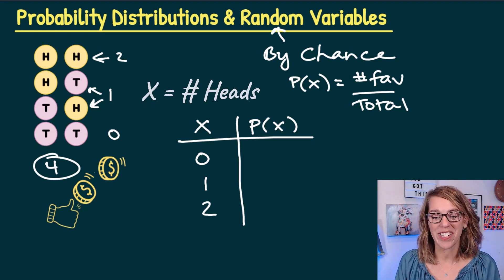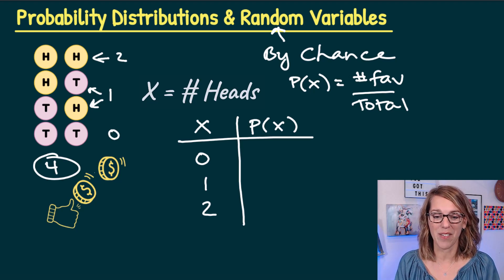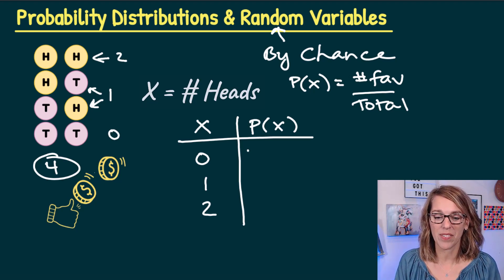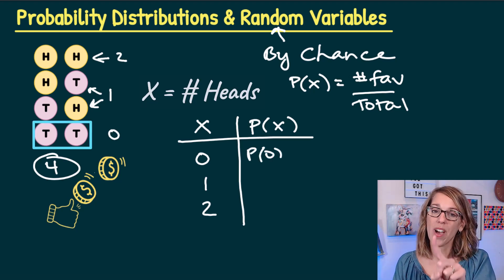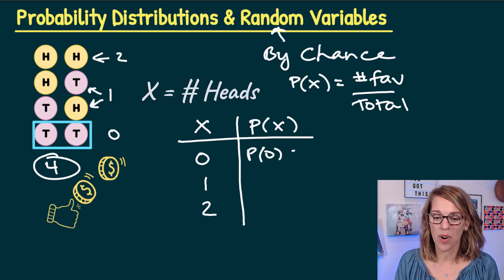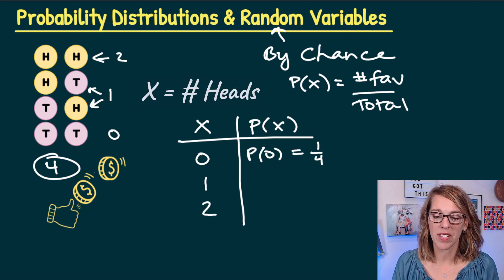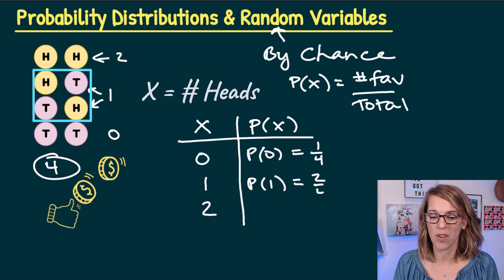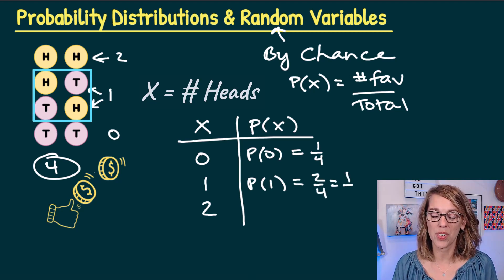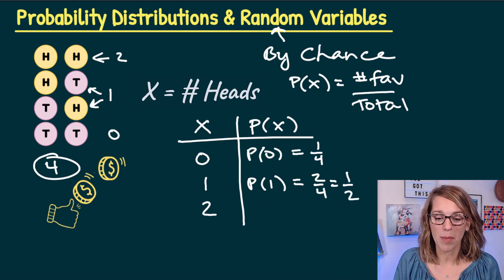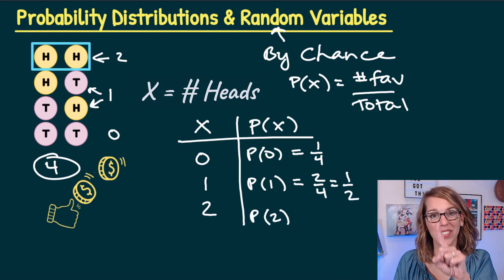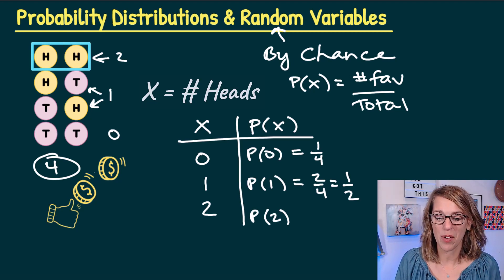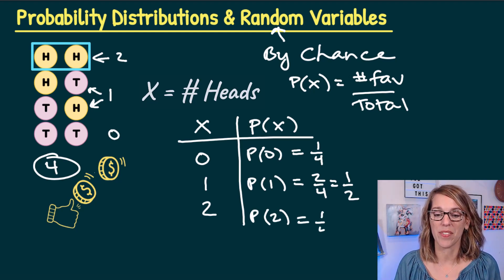So when I put my probabilities together, I can go ahead and start counting. So the probability of zero, there is only one of those, and there are four possible outcomes, so I get a one fourth there. For the probability of one, when X is equal to one, there are two of those, so that's going to be a two out of four, or a one out of two. So finally, the probability of getting two heads, that can only happen one time, so that would be a one out of the four.